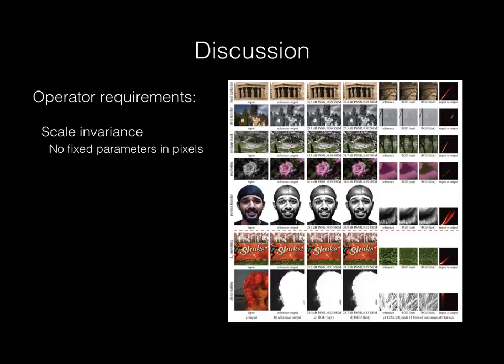Downsampling the image, then running the operator, should be close to running the operator, then downsampling. This means the operator can't have any fixed parameters expressed in units of pixels. This makes sense, since if the operator is, say, a 5x5 convolution, it affects image content very differently when the input image is 1k by 1k as opposed to 128 by 128. An example of an operator that does require a fixed pixel parameter is Bayer demosaicing, where we have a color filter array that's in pixels.